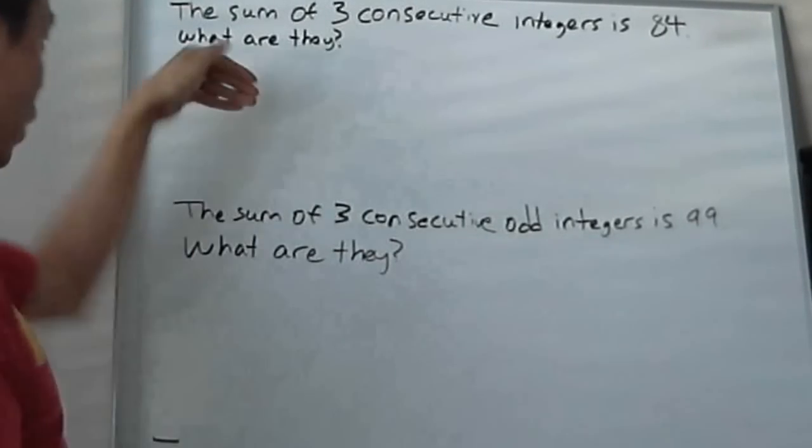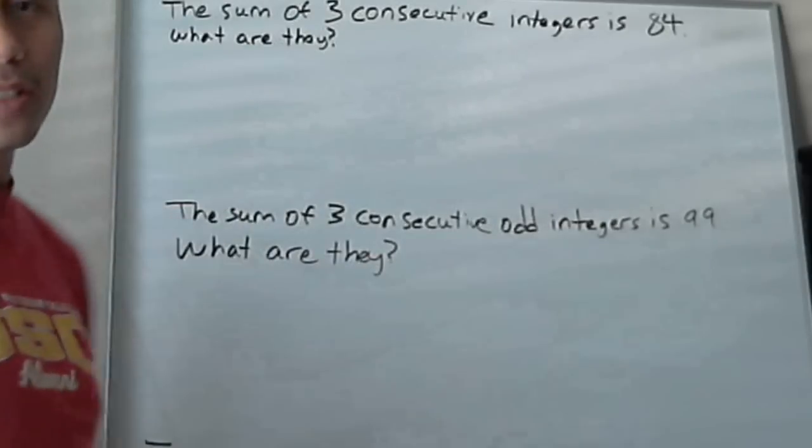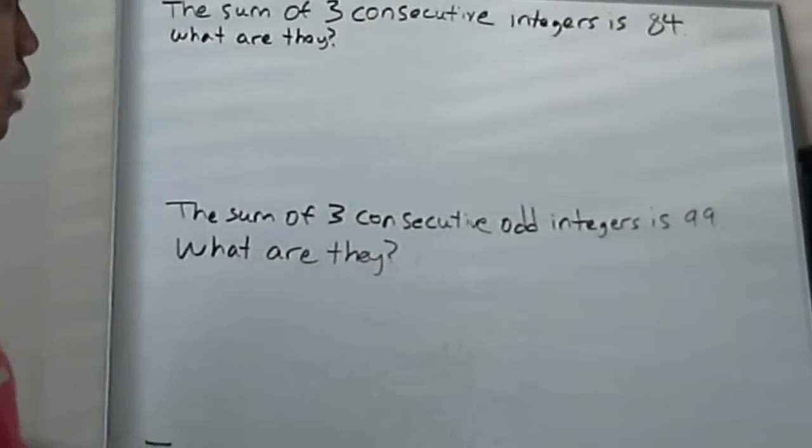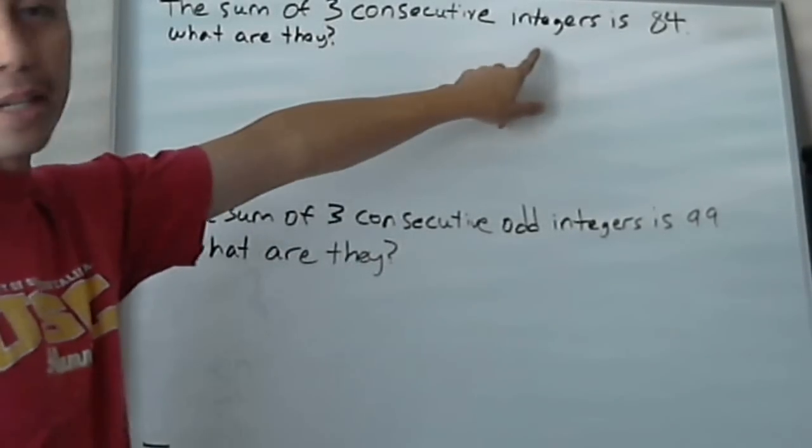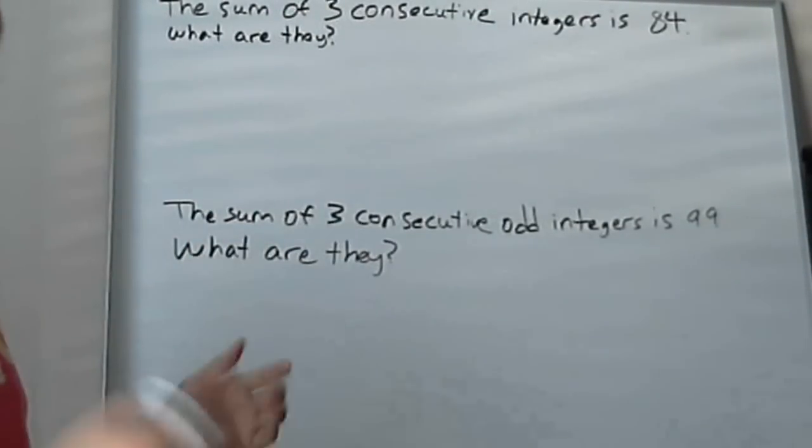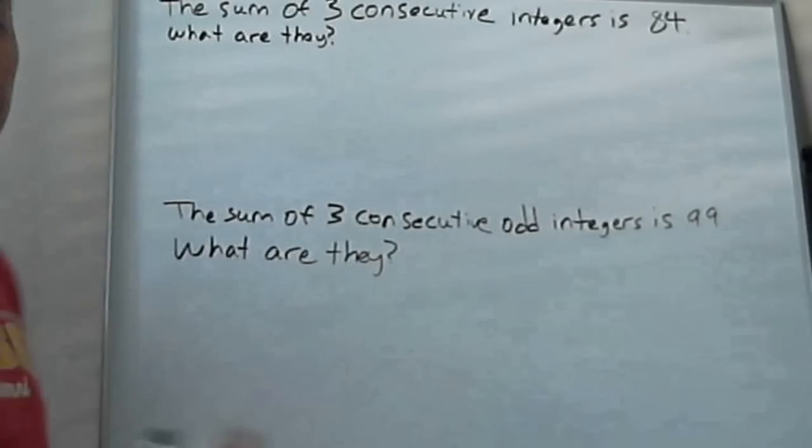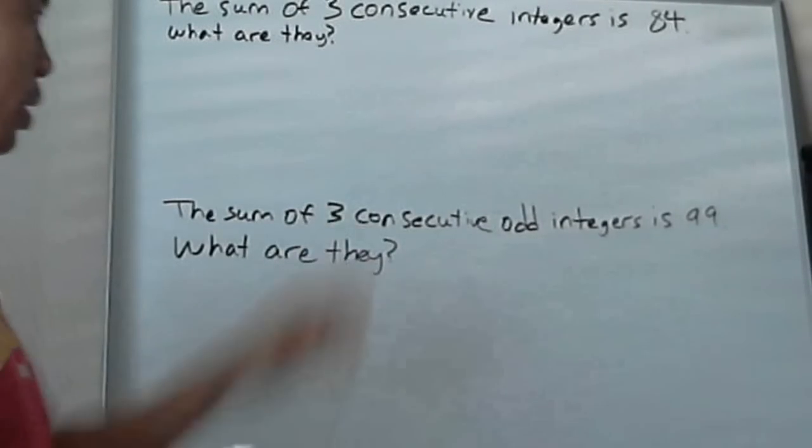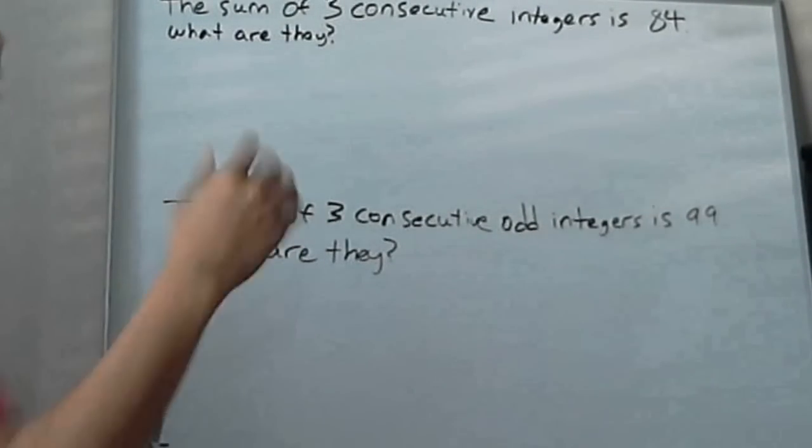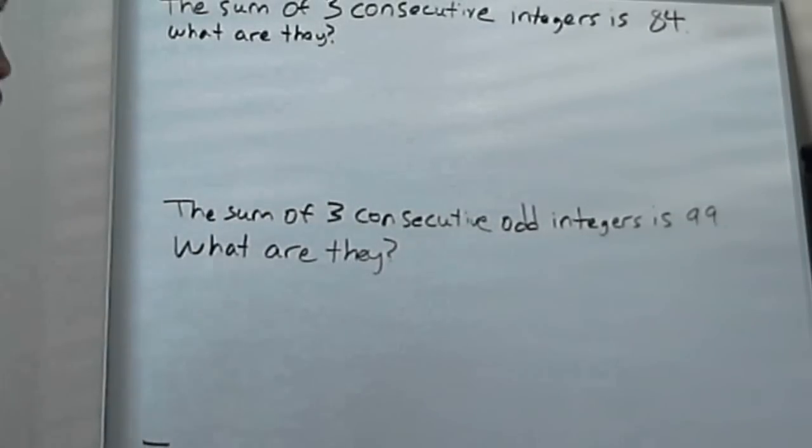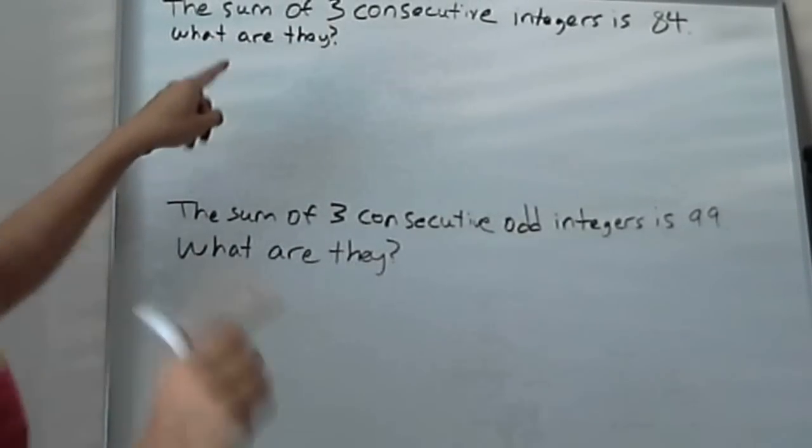So let's start with this first problem. The sum of three consecutive integers is 84. Remember what integers mean. Integers is a very important math term. Integers is just whole numbers. You can have positive, negative, but they're just whole numbers. So one half is not an integer, but like five, eight, ten, whole numbers are integers. That's very important to understand.